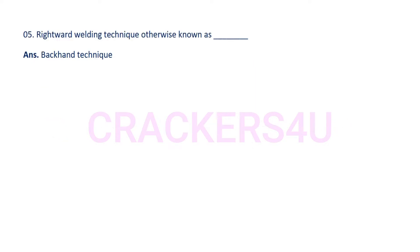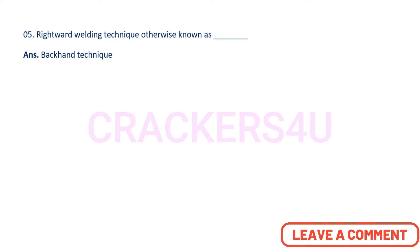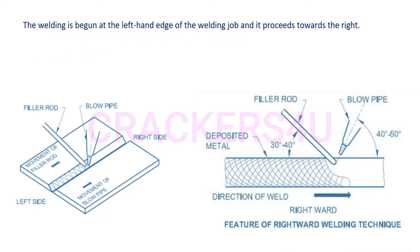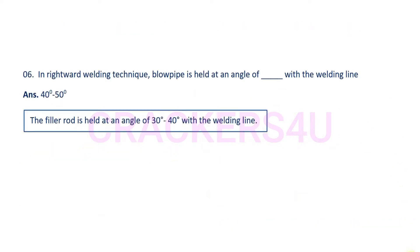Question number five: The rightward welding technique is otherwise known as the backhand technique. Here the welding is begun at the left hand edge of the welding job and it proceeds towards the right. You can see the movement of the filler rod and blow pipe.